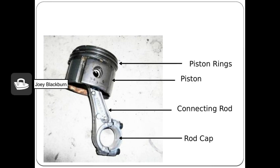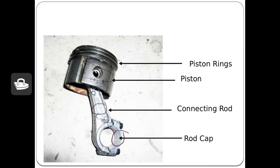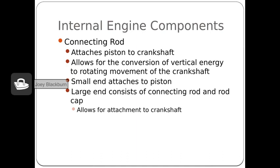Our next graphic shows the entire piston assembly — a better image of the piston rings, which I'll also show from one of our actual engines in the shop. You have the rings going around the piston itself, the piston as the main component, the connecting rod that connects the piston to the crankshaft, and then the rod cap, which is going to securely hold the connecting rod and therefore the piston to the crankshaft. The connecting rod is where we attach the piston to the crankshaft, converting the energy of the piston moving up and down into the rotary movement of the crankshaft.